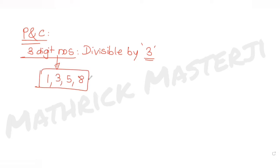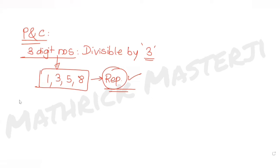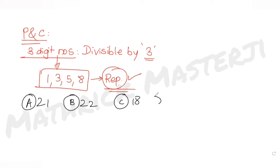Repetition of digits is allowed, so we can have numbers like 3-1-1, 3-3-3, or 3-3-5. The answer choices given are 21, 22, 18, and 20. We need to figure out which is correct.